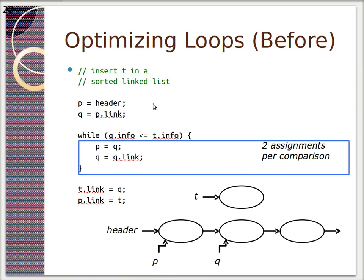So let's continue on. Let's look at this loop stuff. So here we've got a linked list. We've got p equals the header, q equals the link. And then basically while q.info is less than t.info, so we're going through two linked lists. We want p equals q and we want q is equal to q.link. So we basically shift down. So we're always pointing at two of these things and we're always looking at t.info. Then once we're done, we assign q to t.link and t to p.link. So we're basically trying to insert t into a sorted linked list. So we do two assignments per comparison.